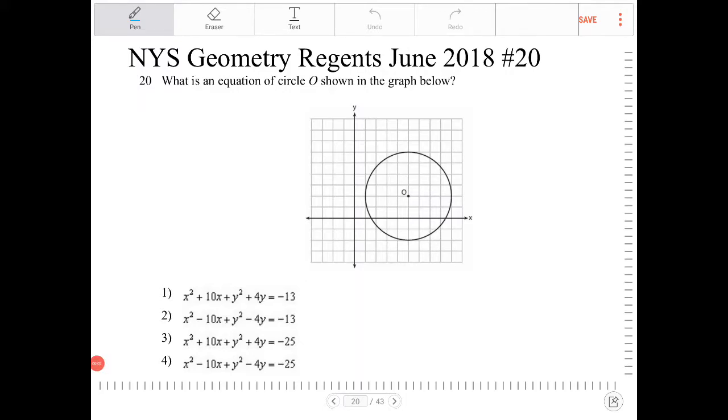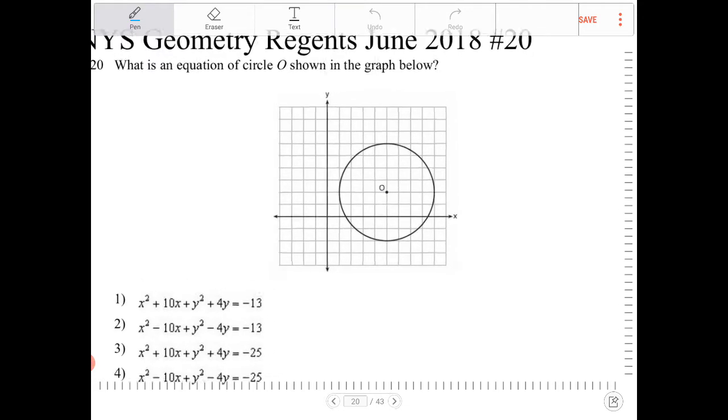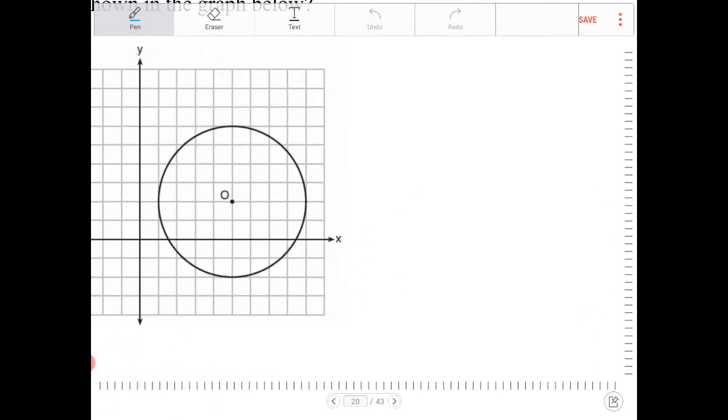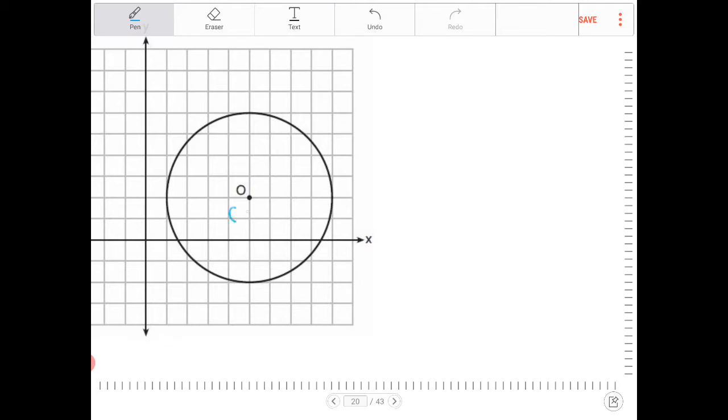What is an equation of circle O shown in the graph below? So to write the equation of a circle, we have to know two things.